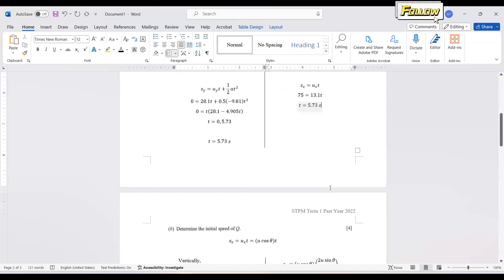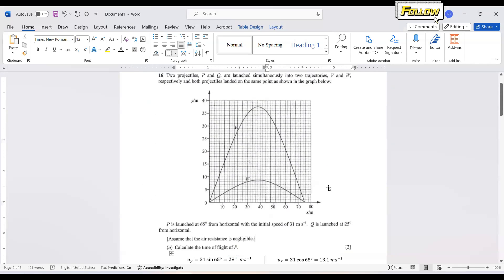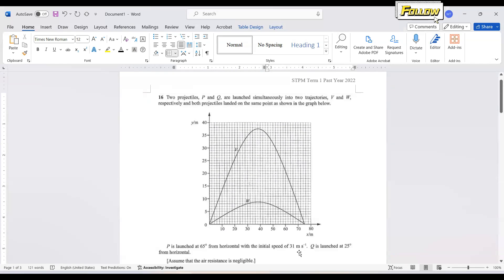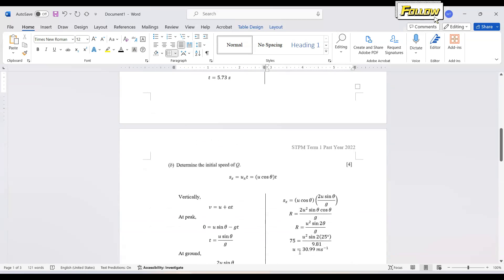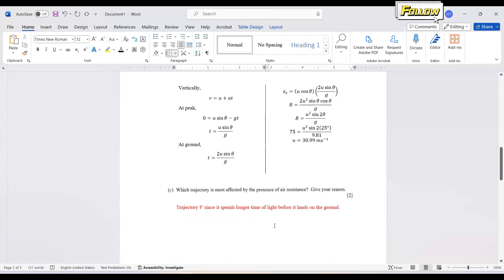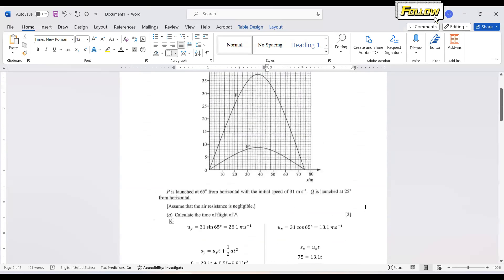So if you check back the equation there that the P also have the initial speed of 31 meters per second. So this is an important information to answer question c. Which trajectory is most affected by the presence of air resistance, give your result. So since both P and Q have same initial velocity, but they are projected at different angles.